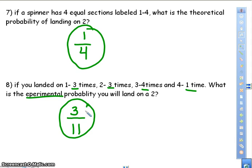So experimental comes from your experiment. Theoretical, whether they do experiment or not, is in theory what should happen. If I have four sections, and one of them is a two, then one out of four times you should land on a two. There's a big difference.